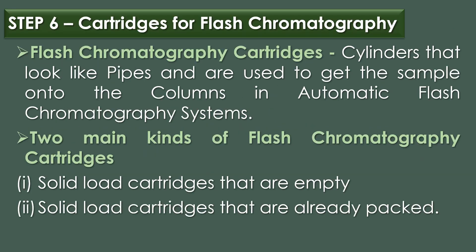Step six is cartridges for flash chromatography. Flash chromatography cartridges are cylinders that look like pipes and are used to load samples onto the columns in automatic flash chromatography systems. There are two main kinds: solid load cartridges that are empty, and solid load cartridges that are already packed.